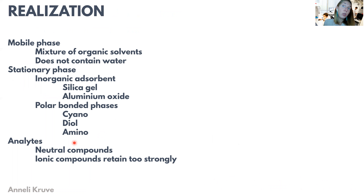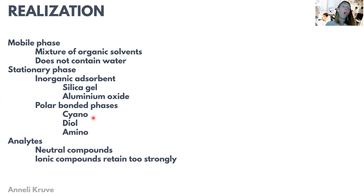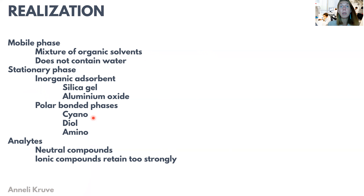The stationary phase traditionally is silica, but it can also be aluminium oxide, which has similar polar groups on the surface, or it can be a modified phase having cyano groups, diol groups, or amino groups on the surface. All of these have slightly different interactions with the analytes, so they can be used to tweak the selectivity when we want to separate compounds that are very hard to separate on normal silica.